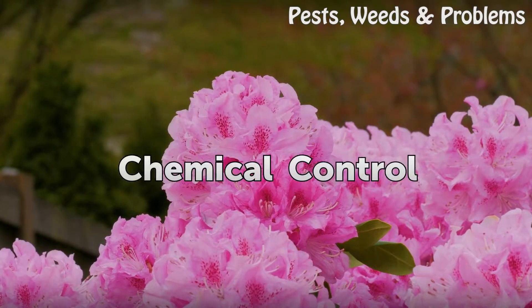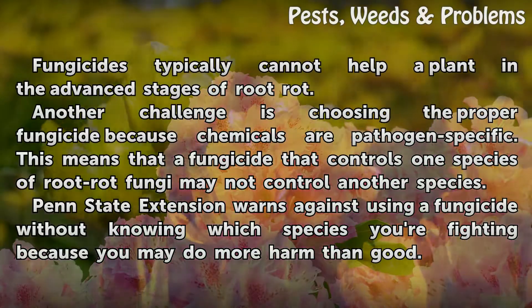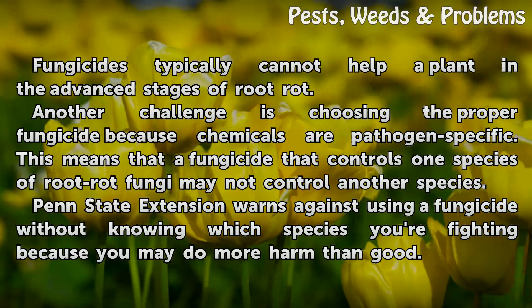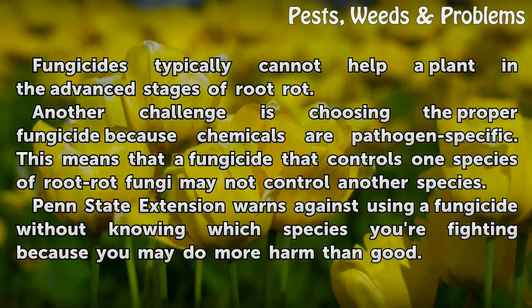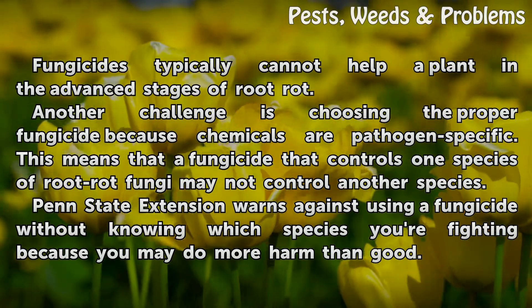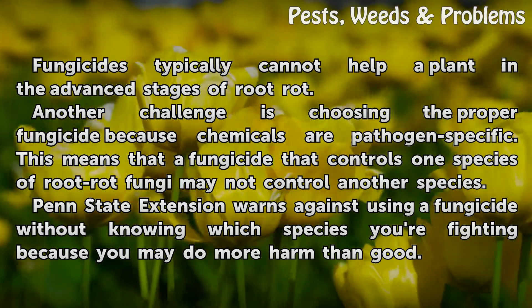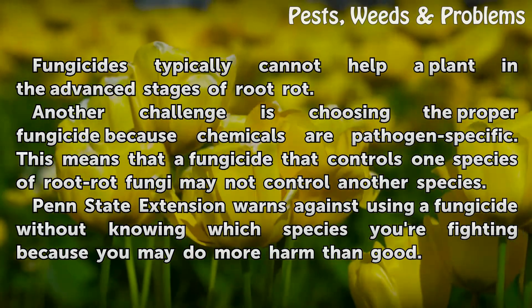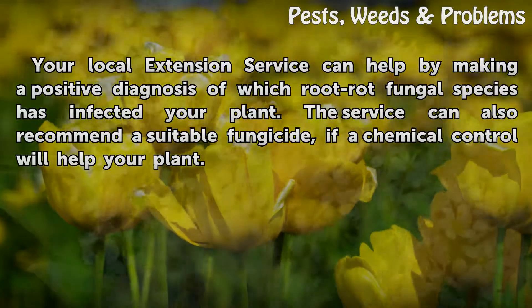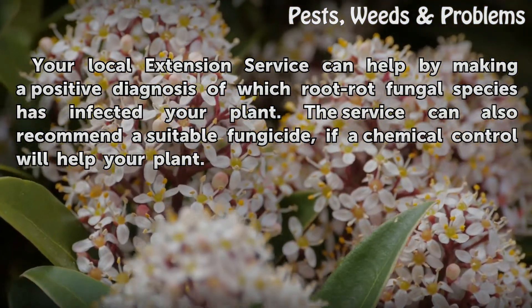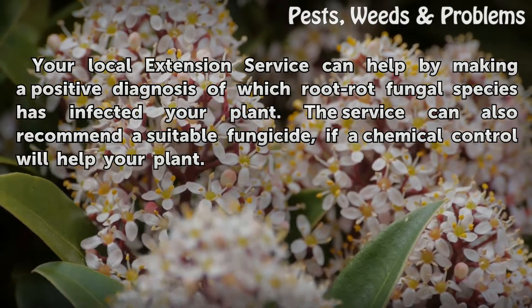Chemical control: fungicides typically cannot help a plant in the advanced stages of root rot. Another challenge is choosing the proper fungicide because chemicals are pathogen-specific — a fungicide that controls one species of root rot fungi may not control another species. Penn State Extension warns against using a fungicide without knowing which species you're fighting, because you may do more harm than good. Your local extension service can help by making a positive diagnosis of which root rot fungal species has infected your plant, and can also recommend a suitable fungicide if chemical control will help.